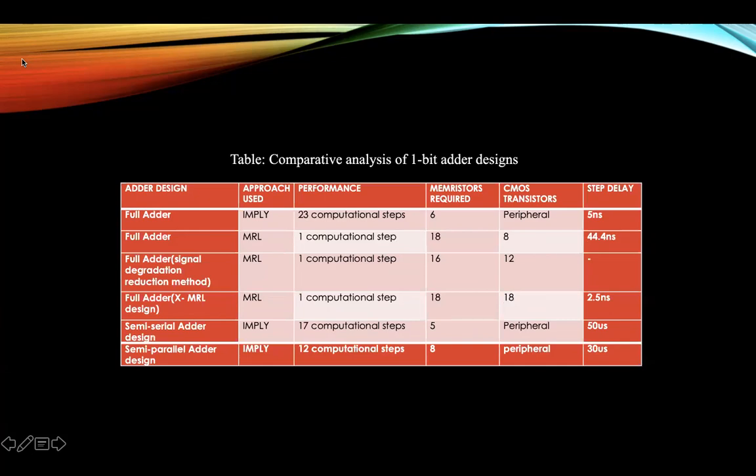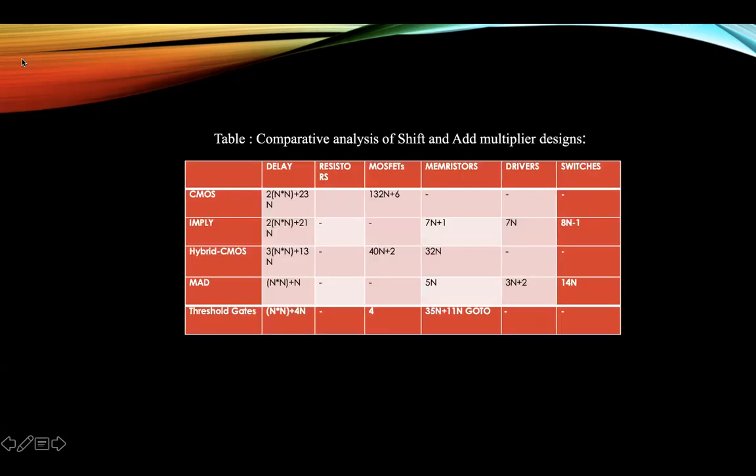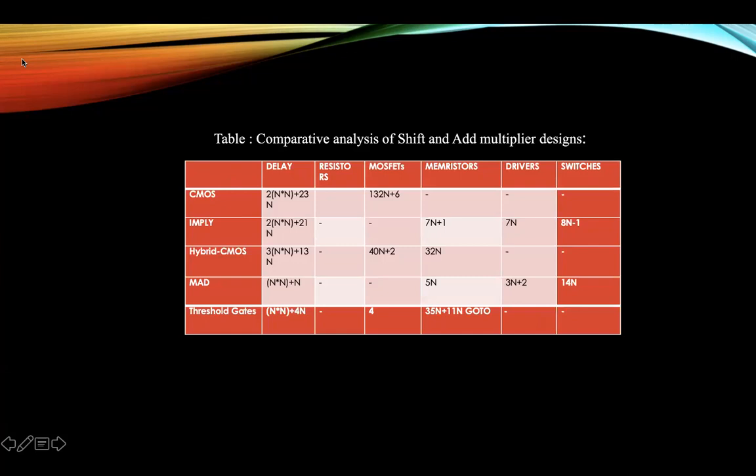Similarly, here is the comparative analysis for one-bit adder designs. Even though the MRL design performs better than the IMPLY designs in terms of performance, it takes up significantly more area than the IMPLY designs, which is a drawback. The semi-parallel and semi-serial designs provide an edge over conventional serial designs on a performance basis. In a similar manner, the comparative analysis of ripple carry adder designs, carry look-ahead designs, and carry select adder designs were also conducted.